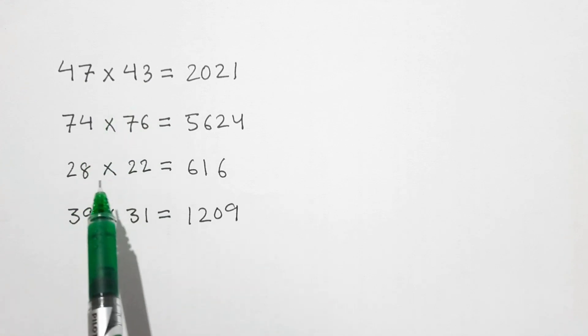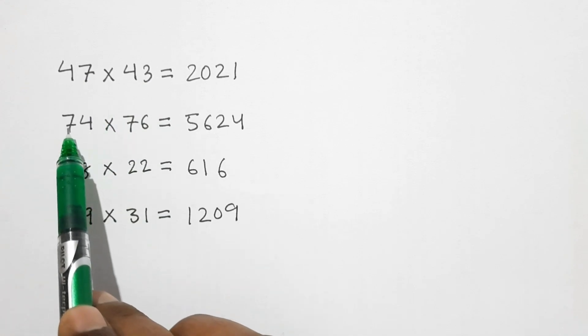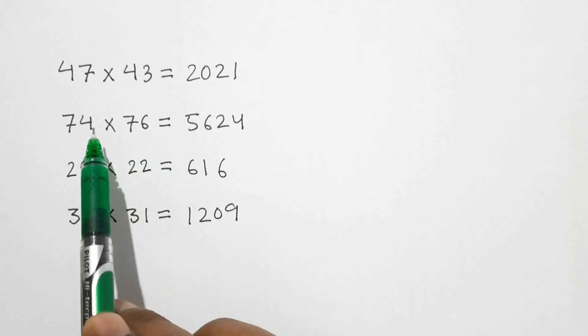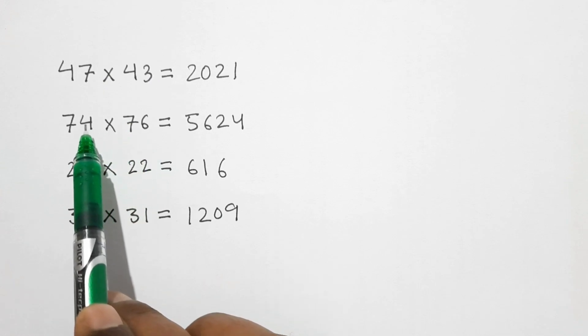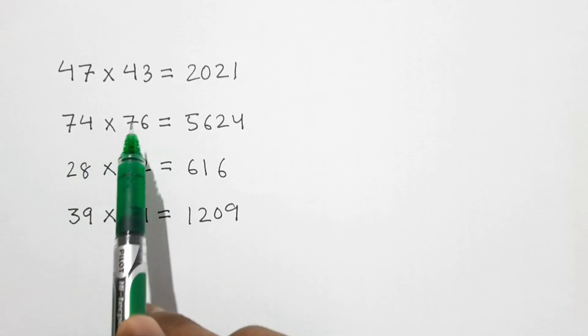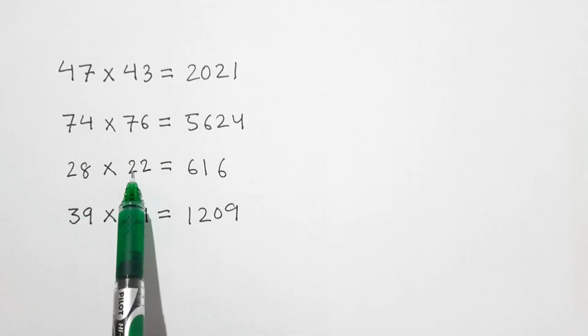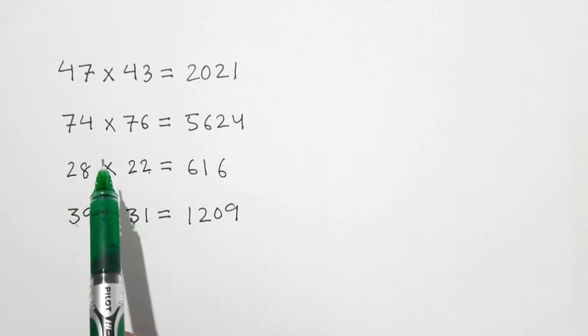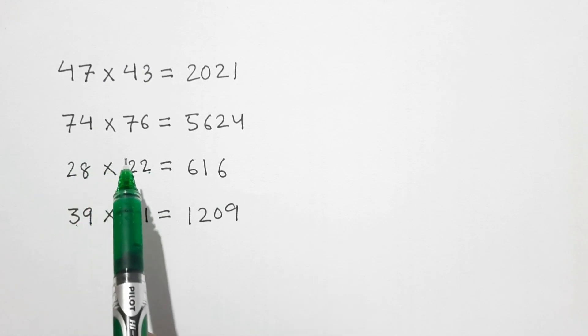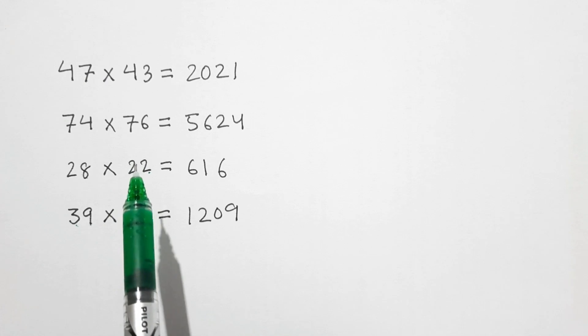The same thing happens to other numbers also. Here also numbers in the tens digit are the same, that is 7, and the sum of the digits in the units place is 10, that is 4 plus 6 equals 10. Here also 2 and 2 same and 8 plus 2 is 10. Here also 3 and 3 same and 9 plus 1 is 10. So that means this trick can be used only for such type of numbers where the digits in the tens place are the same and the sum of the digits in the ones place is 10.